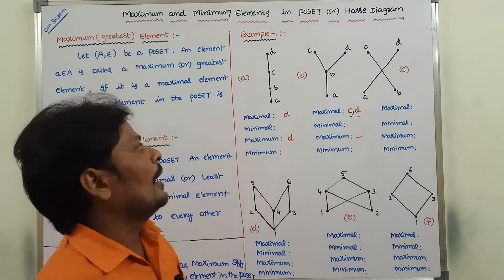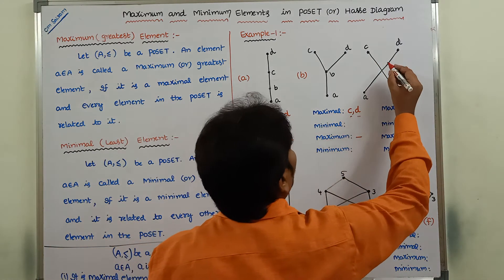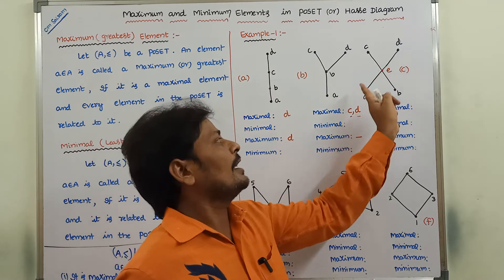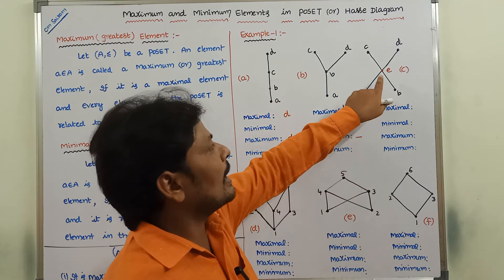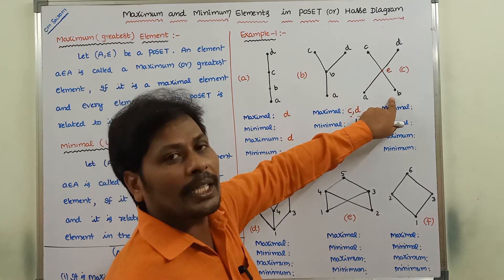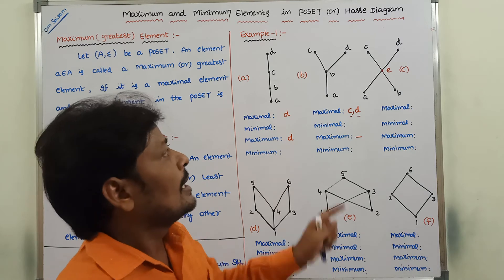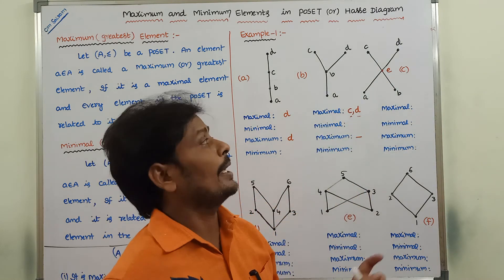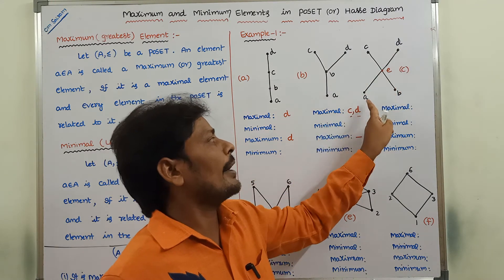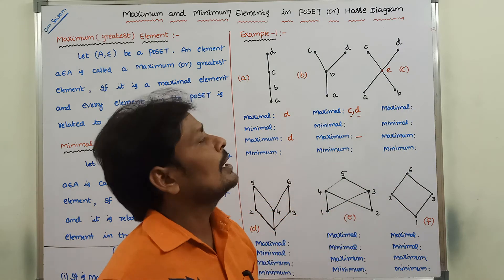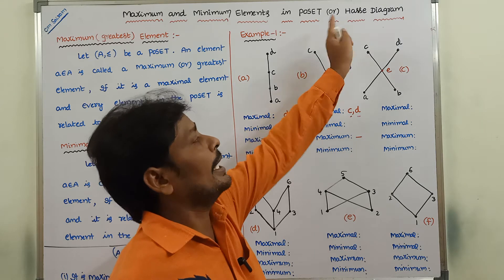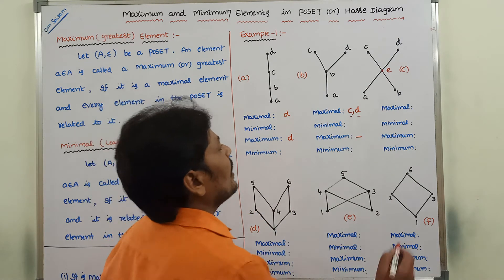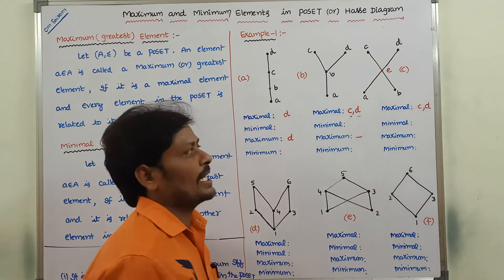Now consider diagram C. Here there is one more vertex E. A is related with E, E is related with D, so A is also related with D. B is related with E, E is related with C, so according to the transitive property B is also related with C. But C is not related with E, C is not related with B, C is not related with A. D is not related with E, D is not related with B. Element C and element D do not have any immediate successor in the upward direction. Hence, maximal elements are C and D.